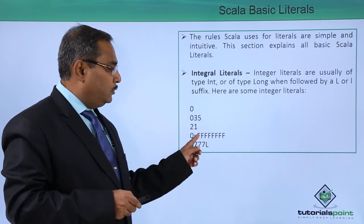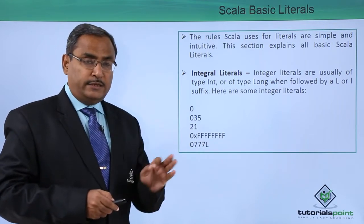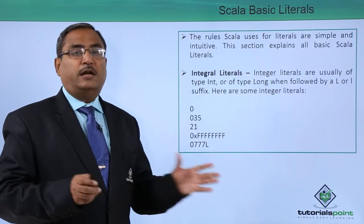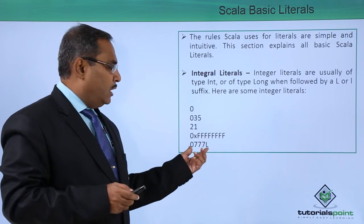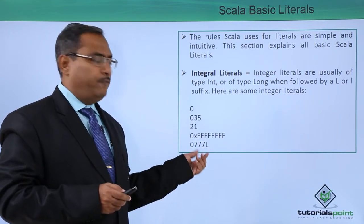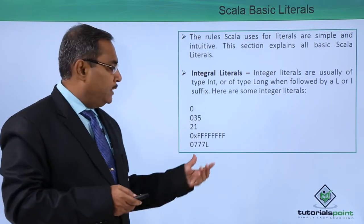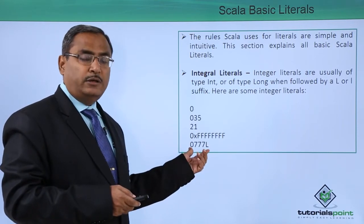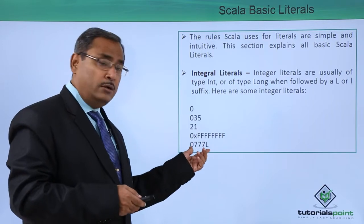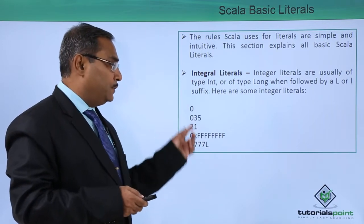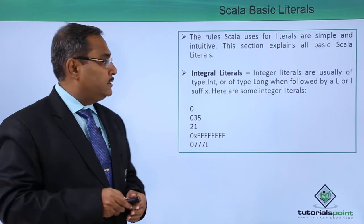Eight hexadecimal digits means 32 bits, which is of the type integer. When followed by capital L — or small l — this particular literal is of type long. These are the examples of integral literals.